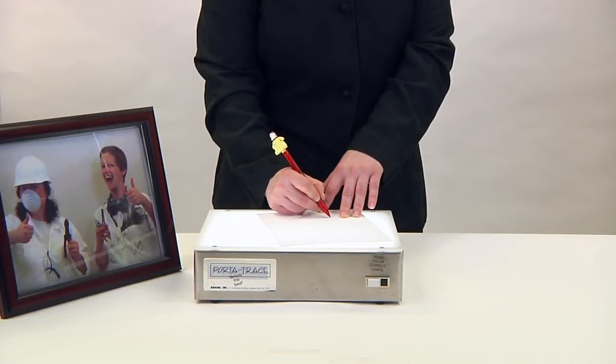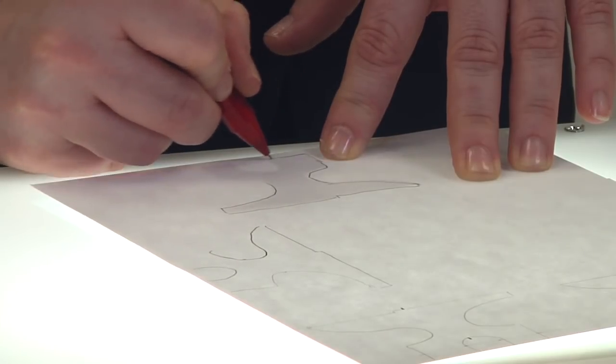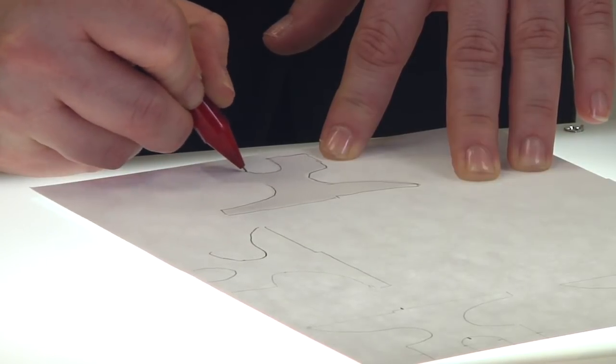A light box is useful in making copies of the different pieces. If you don't have a light box, use a sunny window.